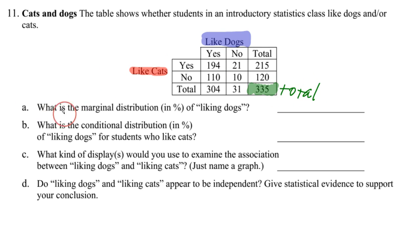So taking a look here, when they say what is the marginal distribution in percent form of liking dogs? Well, that means we need to say, okay, we like dogs. Well, if you like a dog, you should have said yes. So if I come all the way down, I see that that's 304. So this total right here is going to be 304. So 304 people out of the total group, which was 335. Now, if I convert that into a percentage on my calculator here, 304 divided by 335, that gives me a grand total of 90.7, or you could say close to 91. I'm not really checking on rounding, but 90.7%.